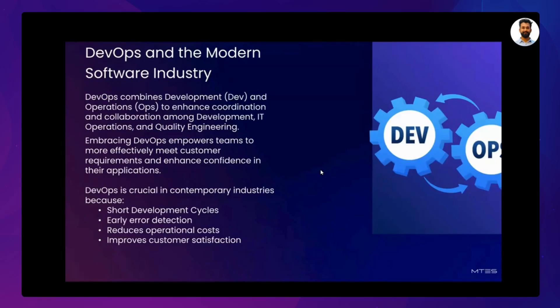The second benefit is early error detection. When teams work together on a project, there is more opportunity to catch errors than when teams work on the same project separately. In a DevOps environment, when one team makes an error in coding or testing, another team can detect it immediately and fix it before it causes any damage. This leads to higher quality products and fewer problems down the road.